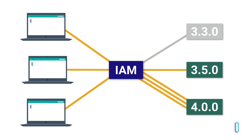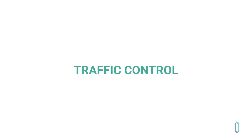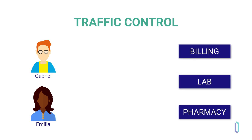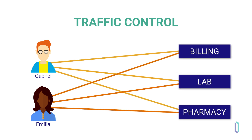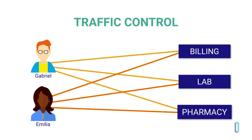Based on what you find in your monitoring, you can begin to control the traffic of these API calls. Say you have two developers, Gabriel and Amelia, that frequently call three different APIs you are exposing within InterSystems IRIS: one for billing, one for lab, and one for pharmacy.